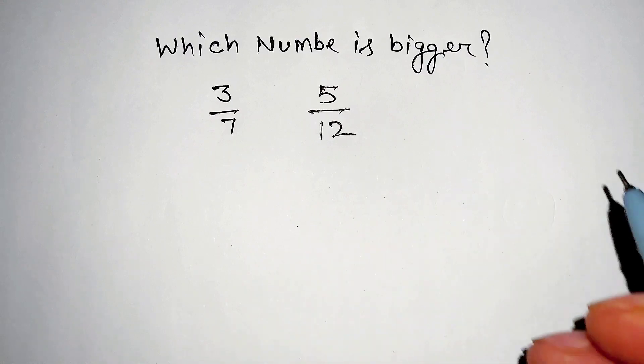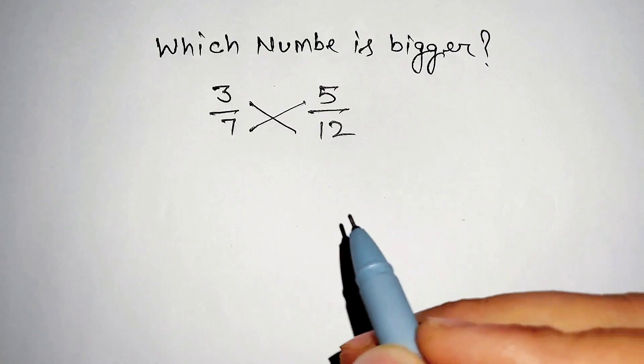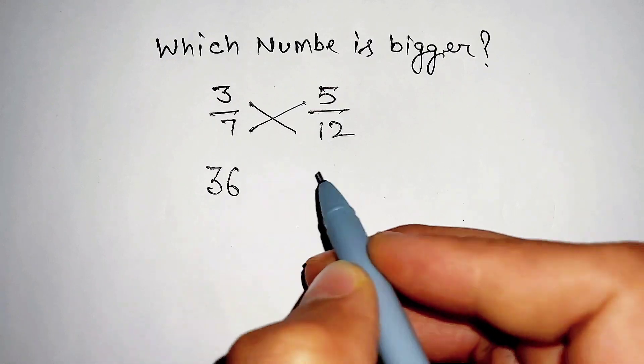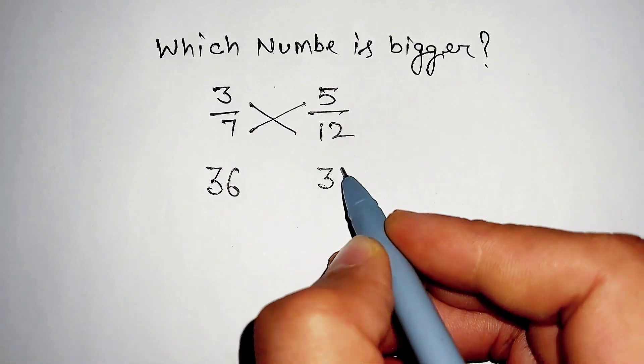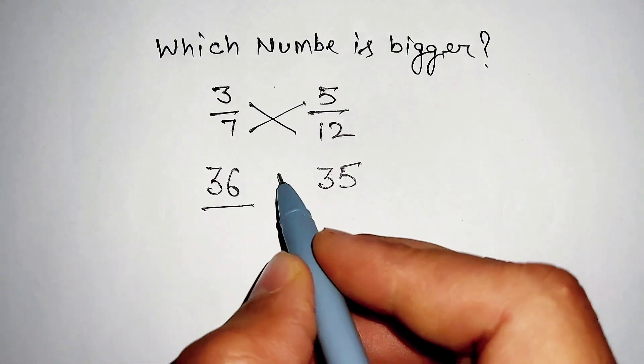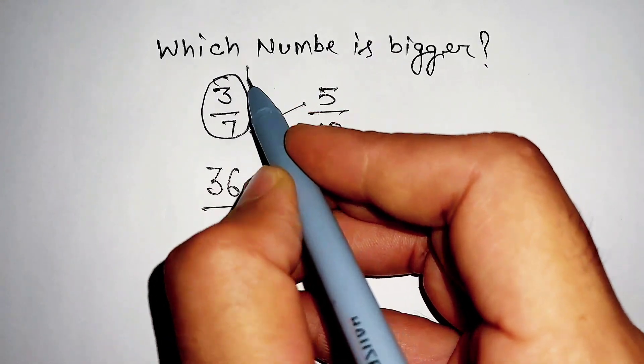To find the bigger number we will simply cross multiply both these numbers. If we multiply 3 with 12 we get 36, and 7 multiplying 5 is equal to 35. Here 36 is bigger than 35, then this number is bigger.